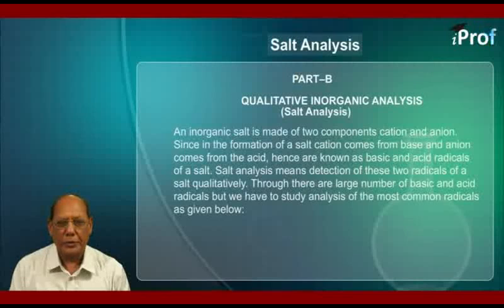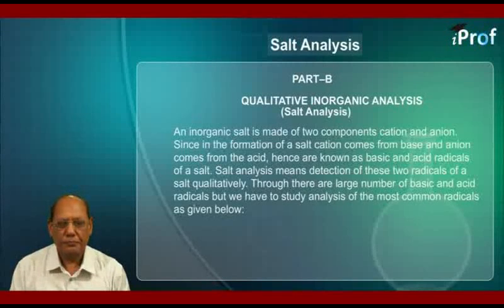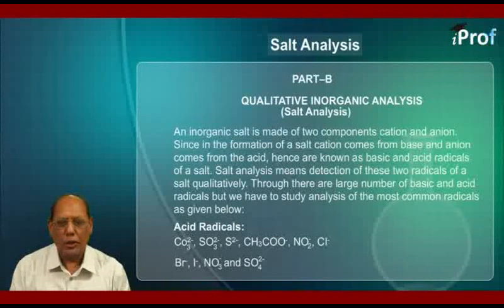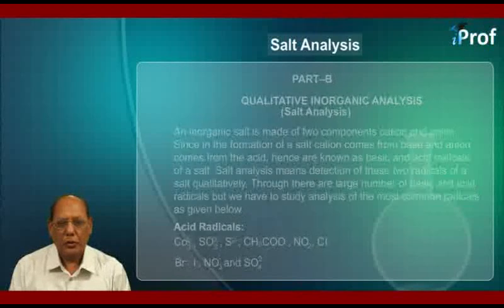There are a large number of basic and acid radicals, but we have to study analysis of the most common ones. The list of acid radicals includes: carbonate, sulfite, acetate, nitrite, chloride, bromide, iodide, nitrate, and sulfate.